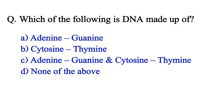Which of the following is DNA made of? Option A: adenine, guanine. Option B: cytosine, thymine. Option C: both adenine, guanine and cytosine, thymine. Option D: none of the above.